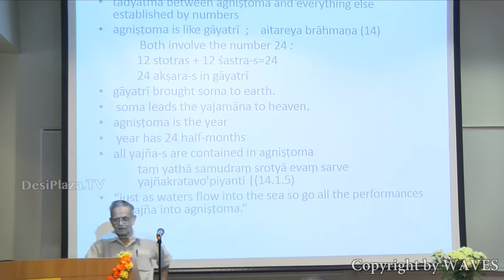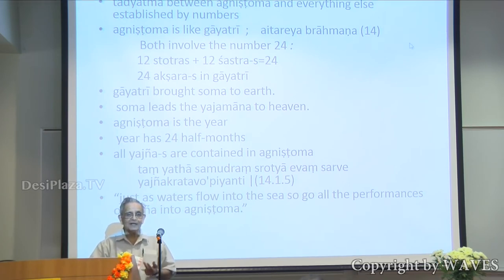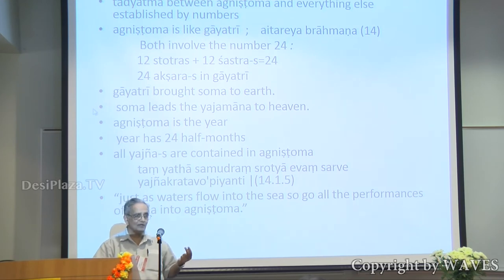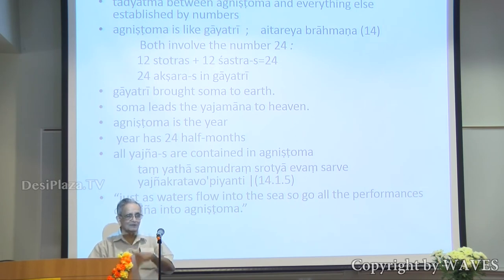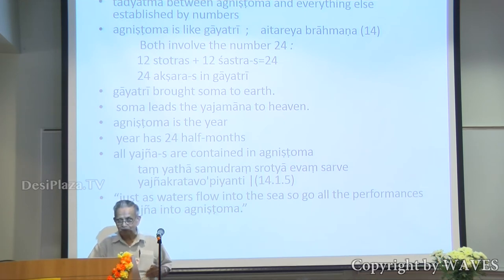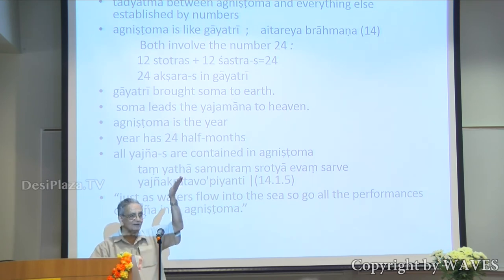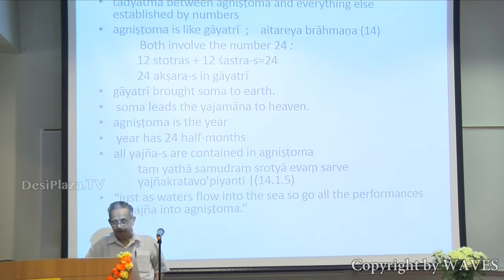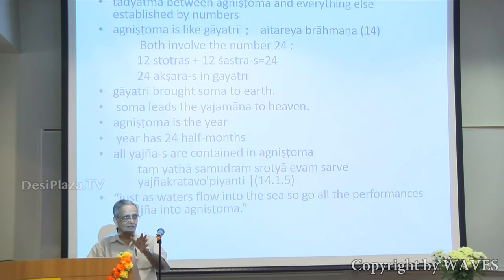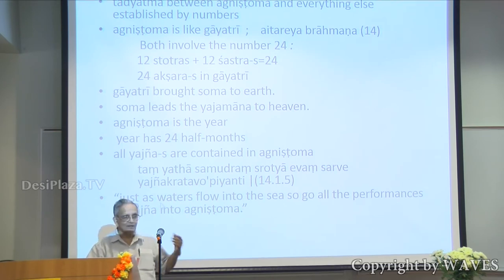They establish identities between Agnishtoma and Gayatri. Gayatri has twenty-four letters. In Agnishtoma, you need twelve shastras and twelve stotras — that makes twenty-four. So they say they are identical. This type of equating numbers, establishing identity by numbers, goes on. Gayatri brought Soma to earth, but Soma takes humans to heaven. A year has twenty-four half months; Agnishtoma has twenty-four shastras and stotras — so they are equated.